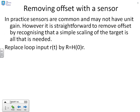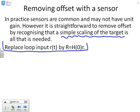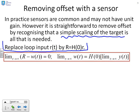How do we remove the offset when the steady state gain of the sensor is not 1? The solution is relatively straightforward: we recognise that all we need is a simple scaling of the target to make it appropriate for the sensor we've got. The solution suggested is to replace the loop input little r of T by capital R, where capital R equals H of 0 times little r.